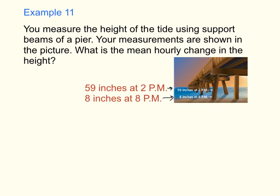Here is a real application using integers. Example number 11, which is on page 31 of your online textbook. You measure the height of the tide using support beams of a pier. The measurements are shown in the picture — the tide is 8 inches at 8 p.m. and 59 inches at 2 p.m. What is the mean hourly change in height? We need to figure out the final height and the initial height to find the average.